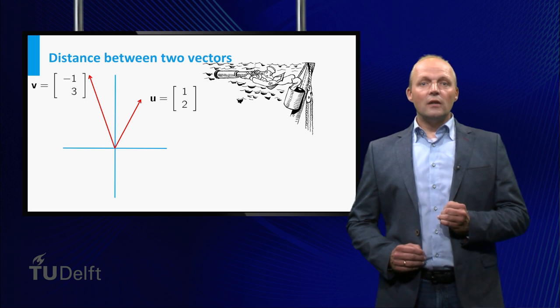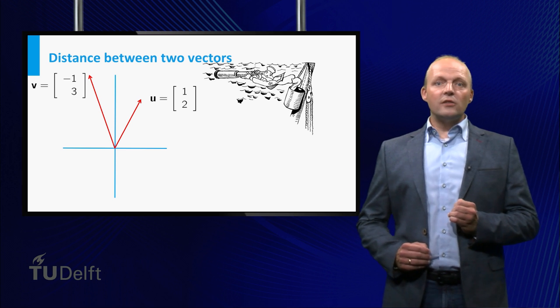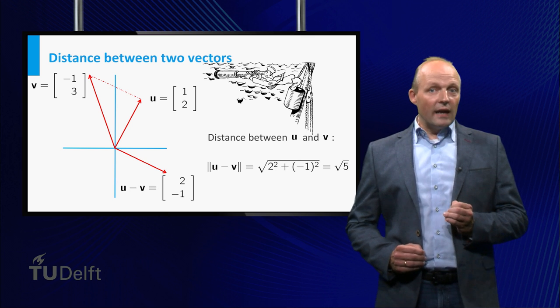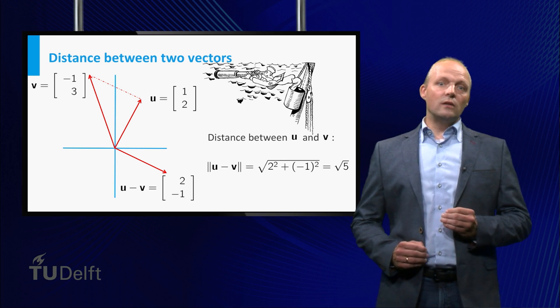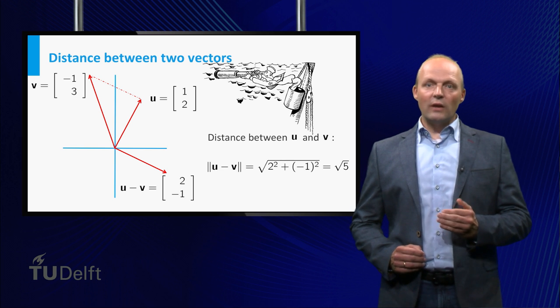As an example, consider the vectors 1, 2 and minus 1, 3. The vector u minus v is then given by 2, minus 1, which has length square root of 5. This leads to the statement that the distance between 1, 2 and minus 1, 3 is square root of 5.